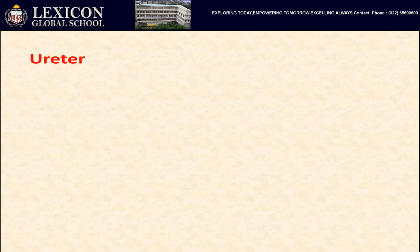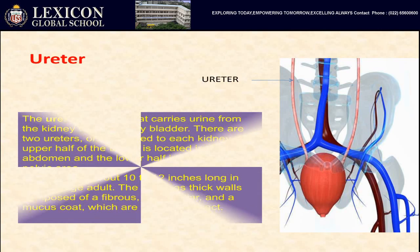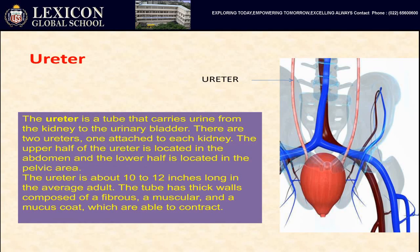Next is the ureter. The ureter is a tube that carries urine from the kidney to the urinary bladder. There are two ureters, one attached to each kidney. The upper half of the ureter is located in the abdomen and the lower half in the pelvic area. The ureter is about 10 to 12 inches long in the average adult, and its tube has thick walls composed of a fibrous, muscular, and mucus coat, which are able to contract.